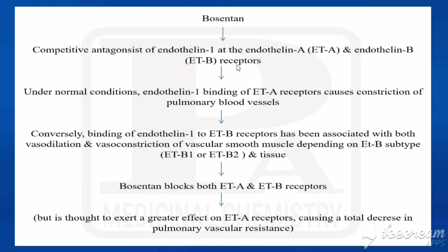Bosentan is a competitive antagonist of endothelin-1 at endothelin A and endothelin B receptors. Under normal conditions, endothelin-1 binding to endothelin A receptors causes constriction of pulmonary blood vessels. Binding to endothelin B receptors is associated with both vasodilation and vasoconstriction of vascular smooth muscle depending on the subtype (B1 or B2) and tissue. Bosentan blocks both endothelin A and B receptors but exerts a greater effect on endothelin A receptors, causing a total decrease in pulmonary vascular resistance.